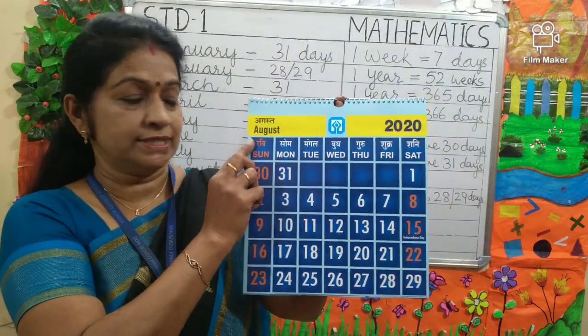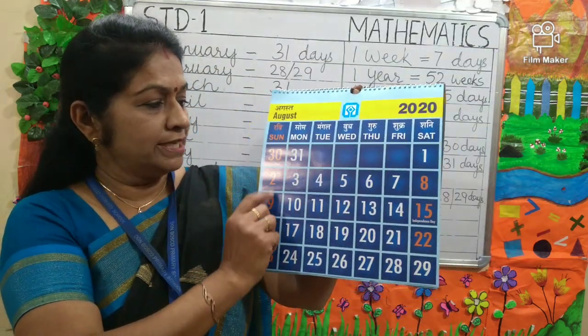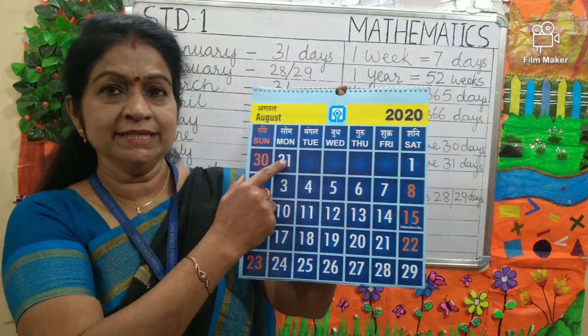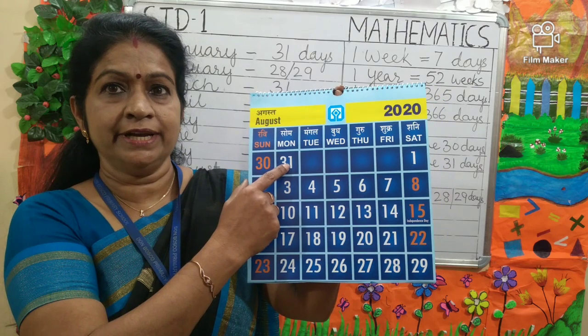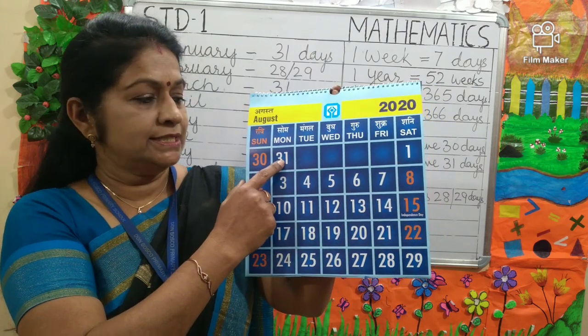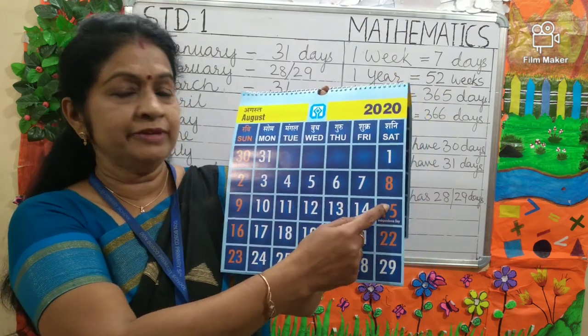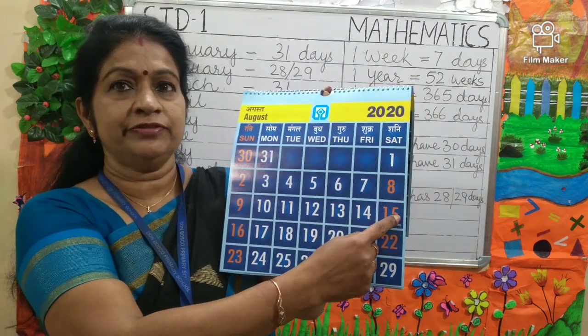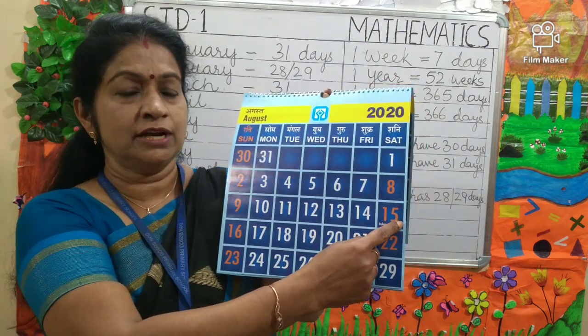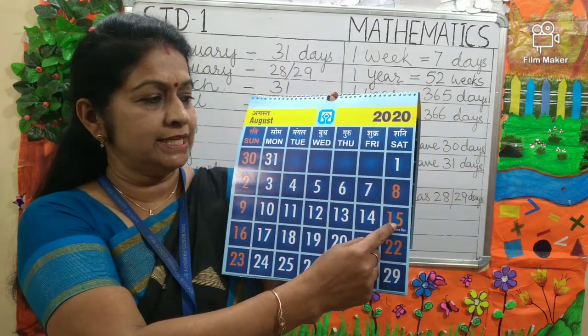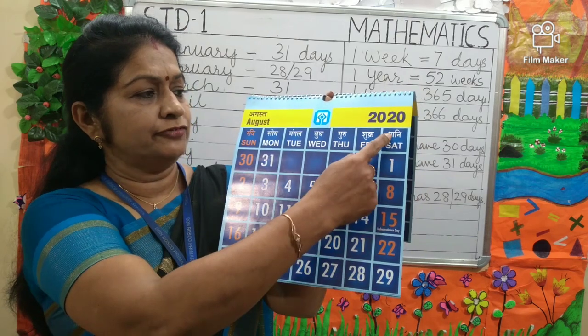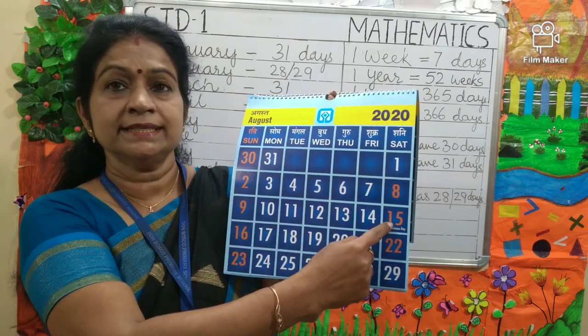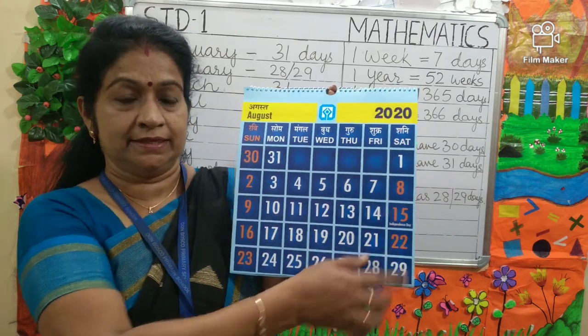Next is August. August has how many days? 31 days. Children, can you tell me which day is 15th August, Independence Day? It falls on Saturday.